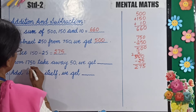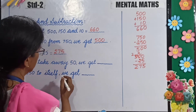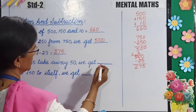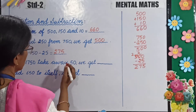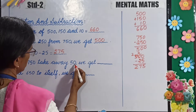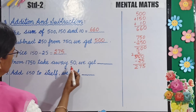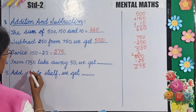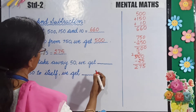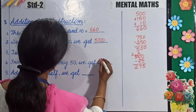From 1750, take away 50 — we get? So you subtract 50 from 1750. Your answer is 1700.